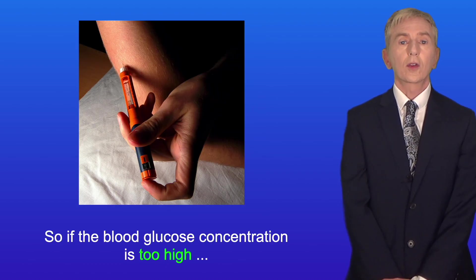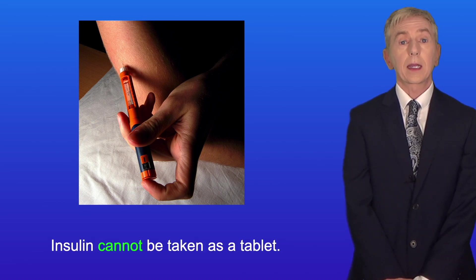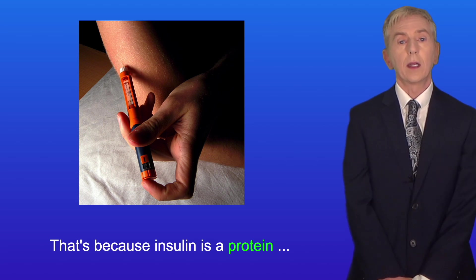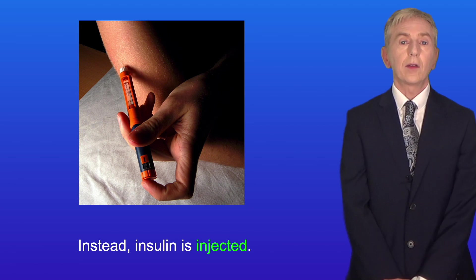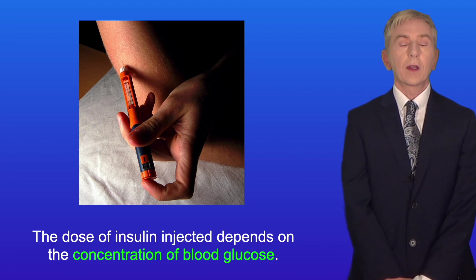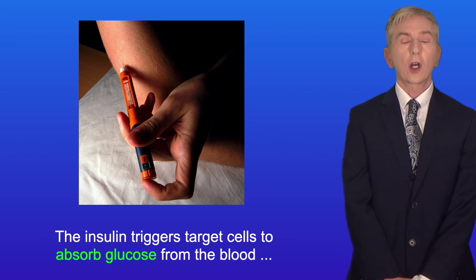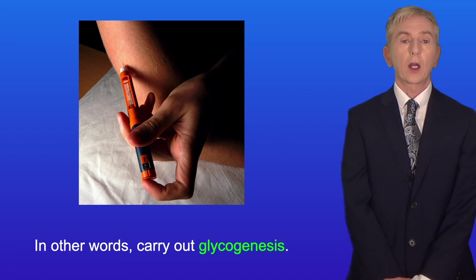If the blood glucose concentration is too high, the patient requires a dose of insulin. Insulin cannot be taken as a tablet, because insulin is a protein and would be digested to amino acids in the stomach. Instead, insulin is injected, and the dose depends on the concentration of blood glucose. The insulin triggers target cells to absorb glucose from the blood and store it as glycogen — in other words, carry out glycogenesis.